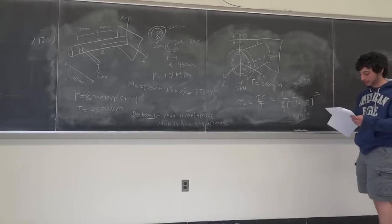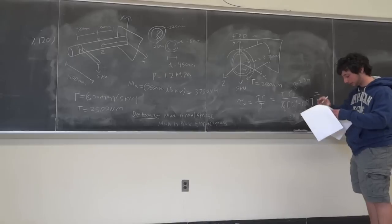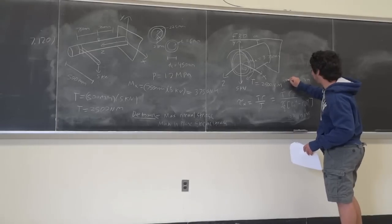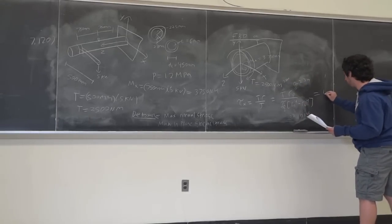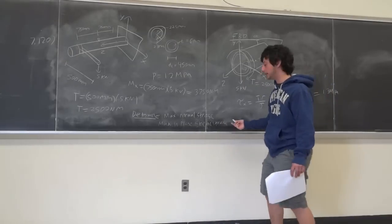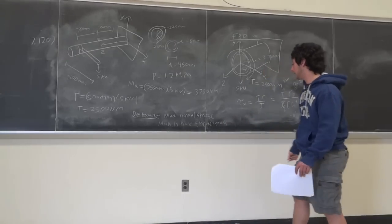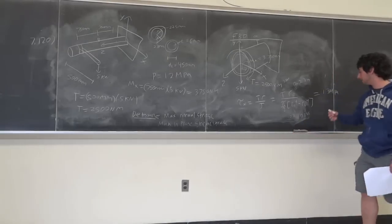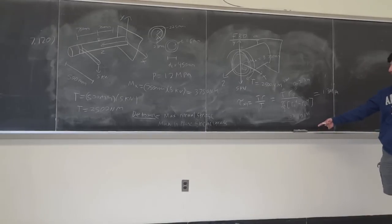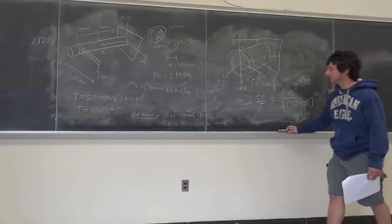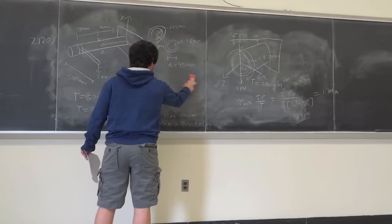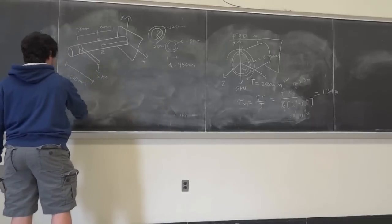Once you plug all those values in, you get tau xy equal to 1.3 MPa. We discussed that the transverse shear VQ over IT is zero at this location. If there were a transverse shear contribution, you would add it to this value. But in this case tau xy equals 1.3 MPa from torsion only.